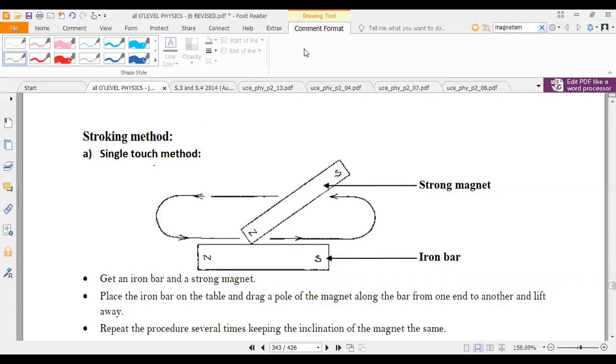In the single stroke method, we get an iron bar which is supposed to be turned into a magnet, and we also use a strong magnet.